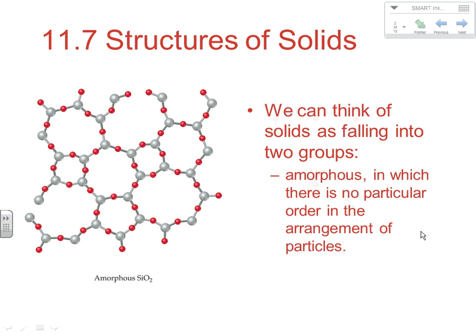With an amorphous solid, you have different pockets of substance that are at enough kinetic energy to break away, so it starts to melt or break apart in little sections. Instead of a definite melting point, you get a melting point range — it begins to soften at a certain point, so you'd no longer totally call it a solid, but it's not really a liquid yet. Eventually it would all melt, giving you a liquid.